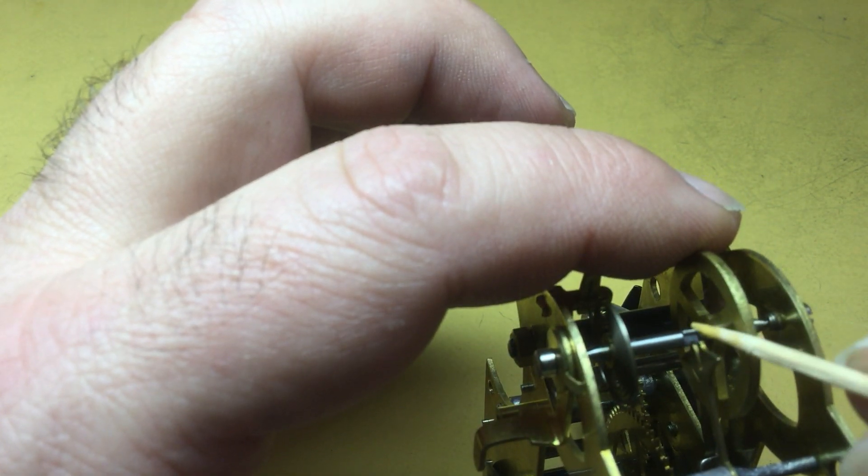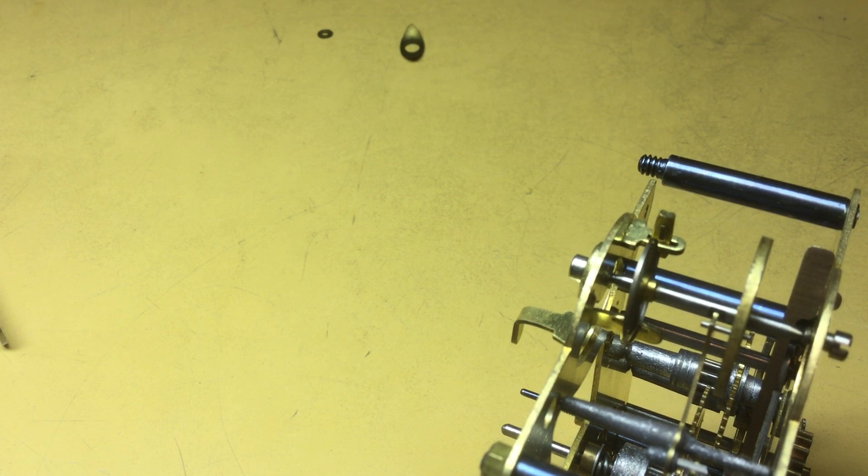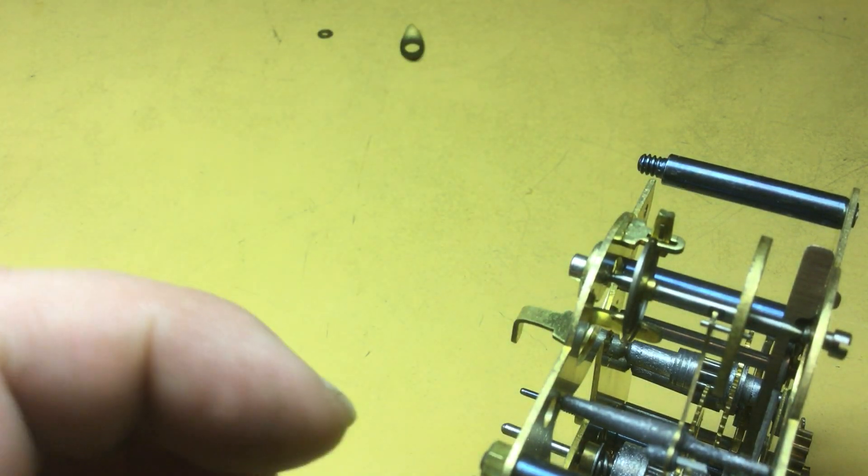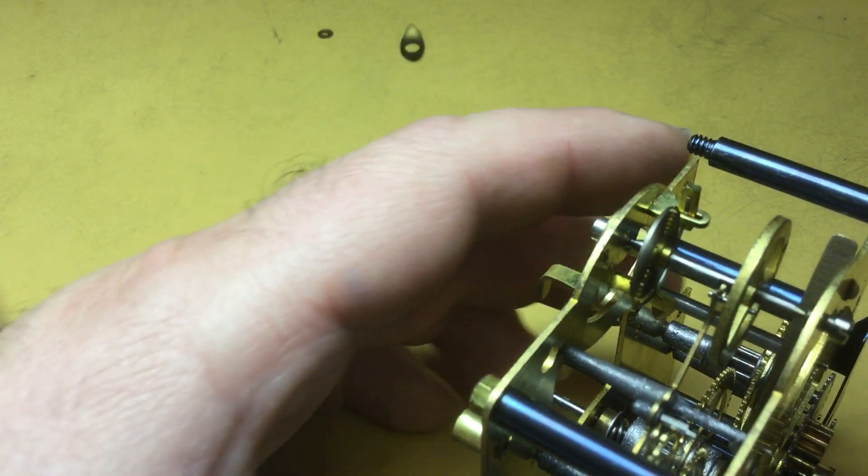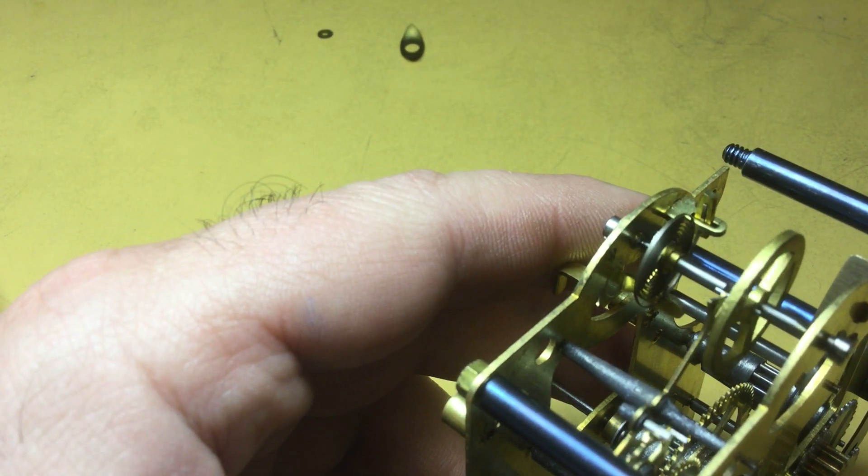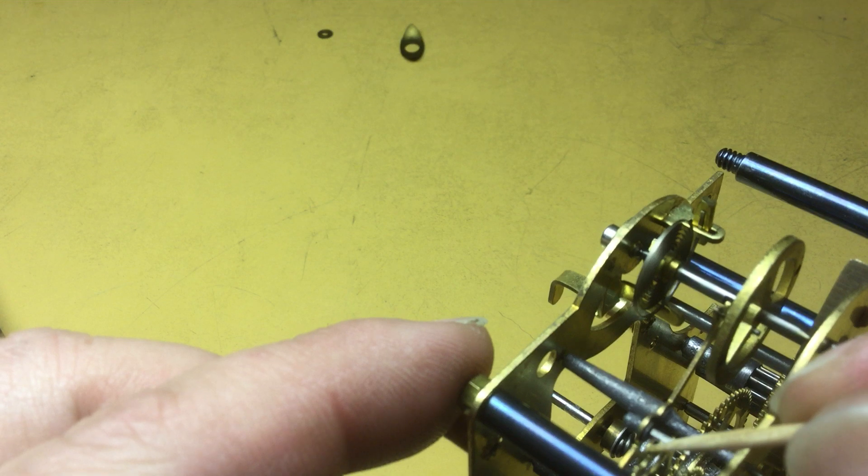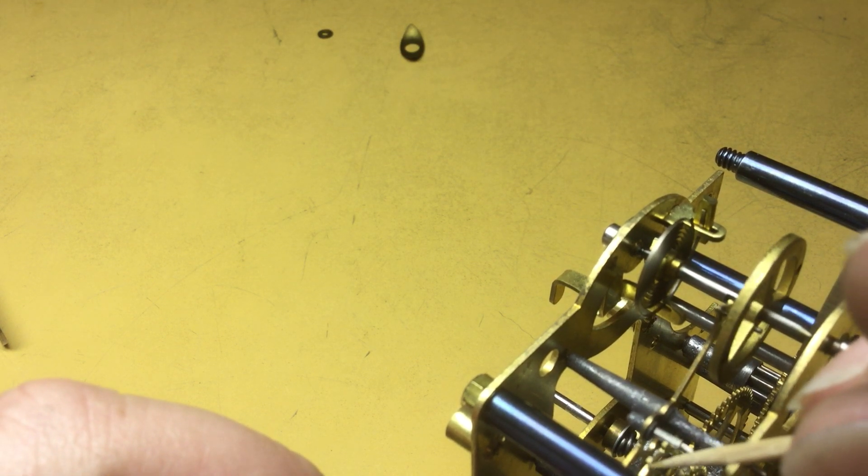Place a drop of oil on the impulse pin. And very carefully, a drop of oil on, say it with me now, every other tooth of the escape wheel. By applying a little bit of power to the third wheel there, we can advance it a couple teeth.